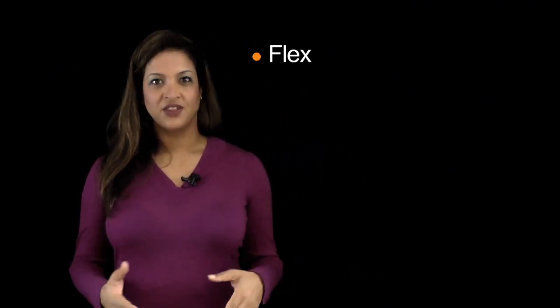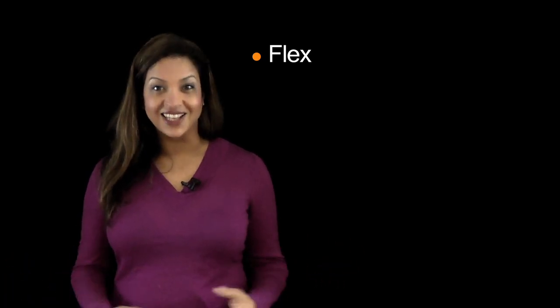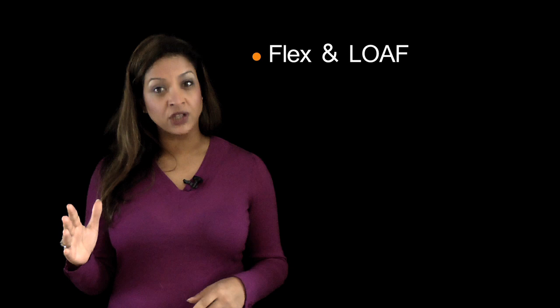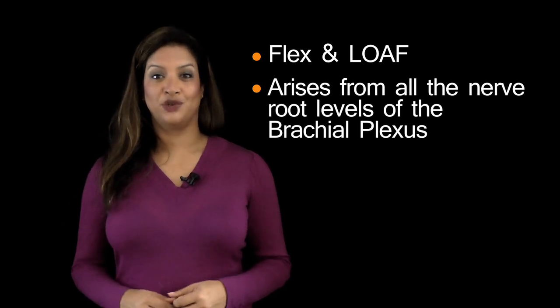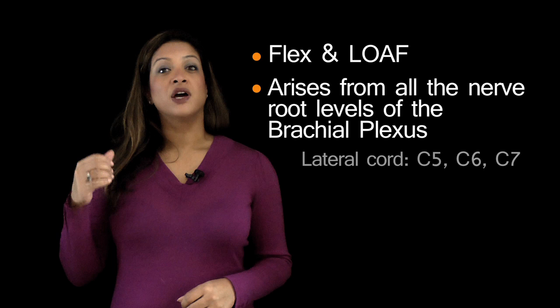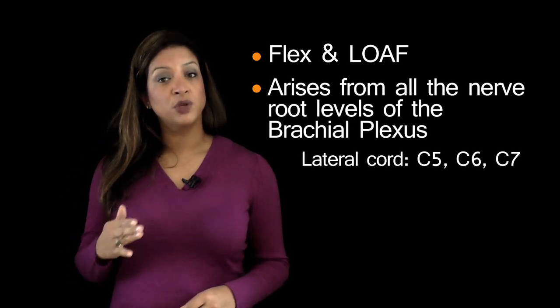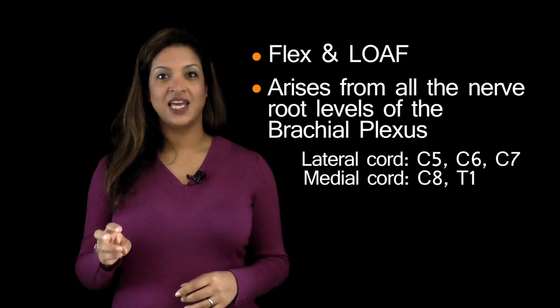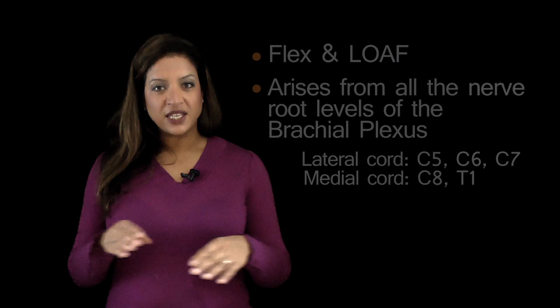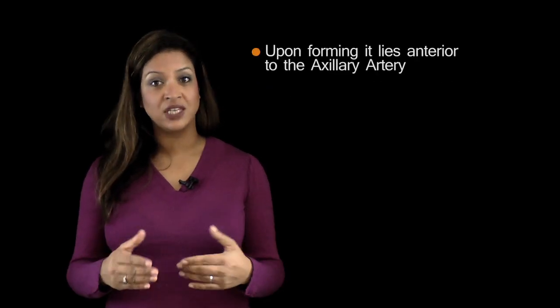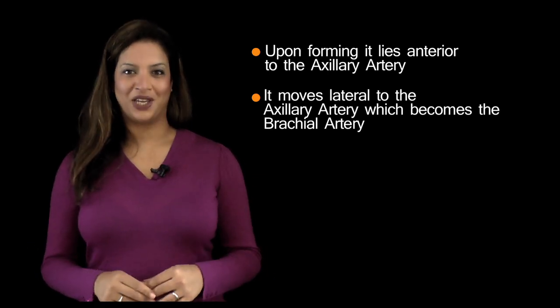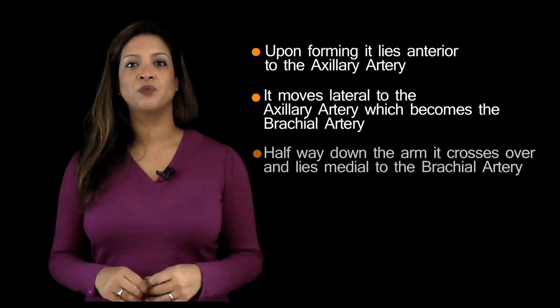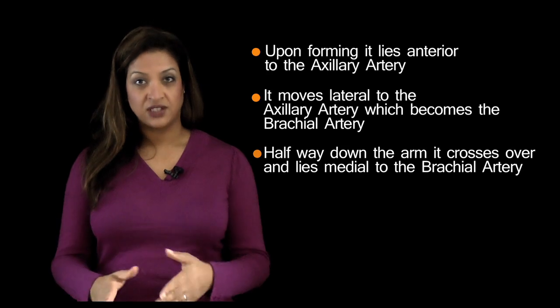In summary, when you think of the median nerve, think of flex and loaf. The median nerve arises from all nerve root levels of the brachial plexus: C5, C6 and C7 via the lateral cord, and C8 and T1 via the medial cord. Immediately upon forming, it lies anterior to the axillary artery, quickly shifts lateral to it, and then — about halfway down the arm — crosses the brachial artery to lie medial to it as it enters the elbow.